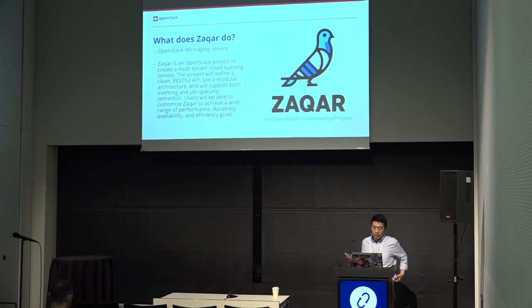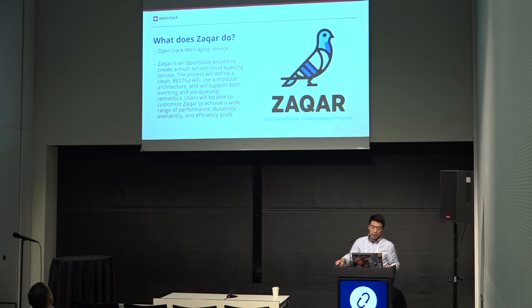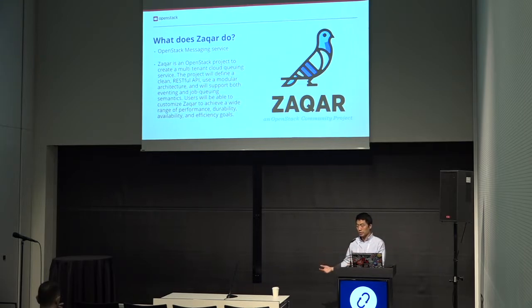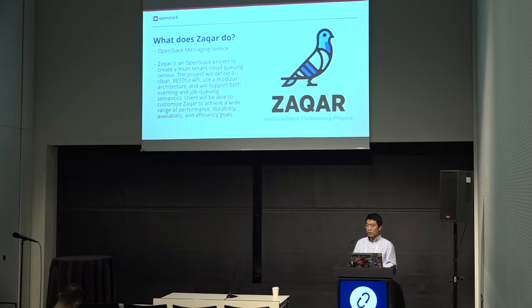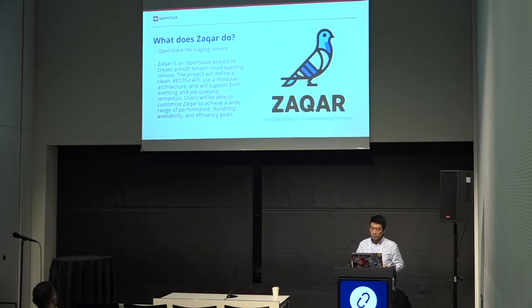Currently, Zaqar can support multi-tenant — that's for sure. You can consume the queue service or the notification service via a RESTful API, and it has a very simple architecture. It can support both notification service and queue service, similar to what you find on AWS with SQS and SNS. You can also see a PubSub notification service on Google Cloud — I think it's named Pub/Sub or something similar.